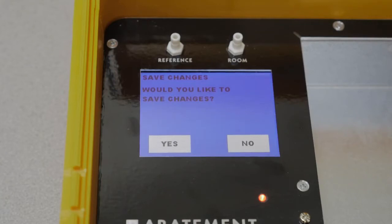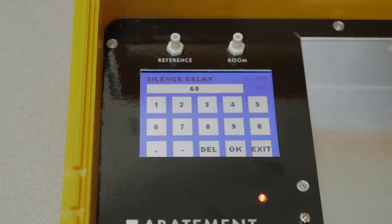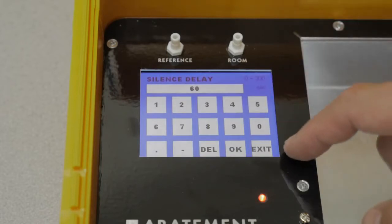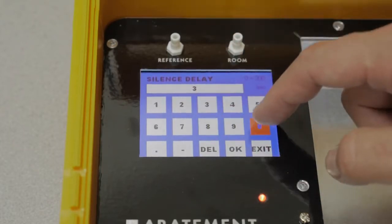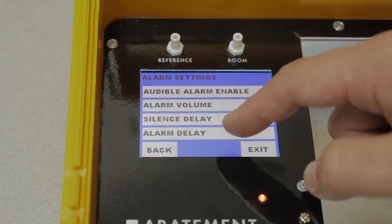As always, be sure and save your changes. Through silence delay, when the silence button is pressed, the alarm will be muted for the duration set. The range is from 0 up to 300 seconds. Alarm delay will work the same way.